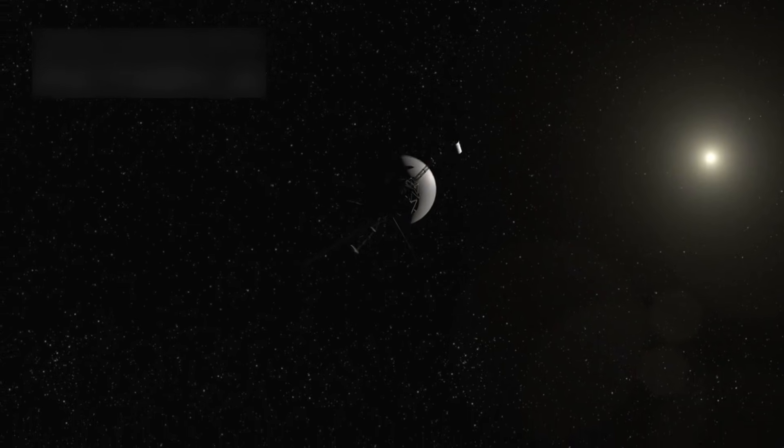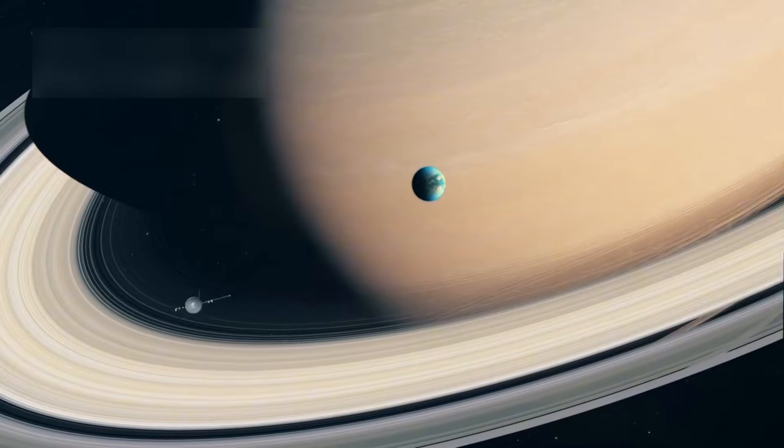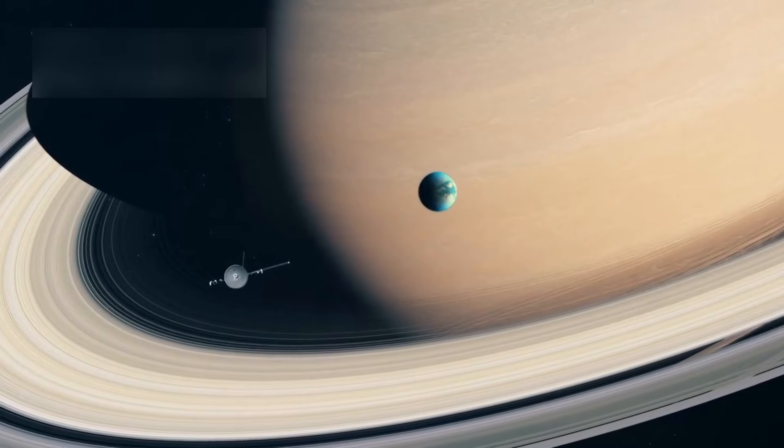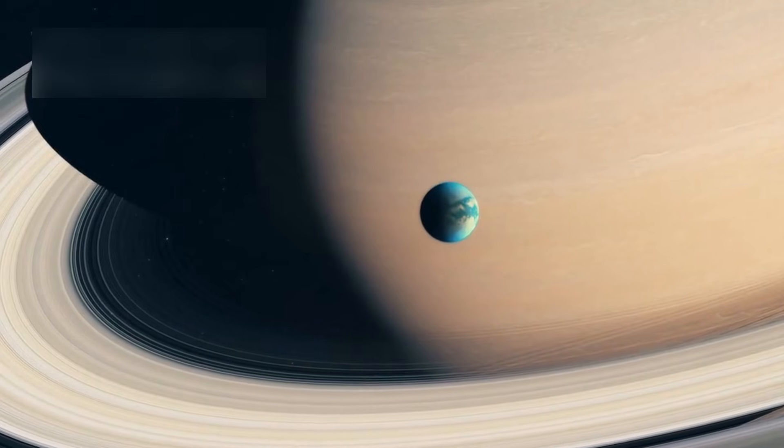On September 5, 1977, NASA launched Voyager 1, beginning one of the most daring space missions in human history. The spacecraft, along with its twin Voyager 2, was designed to explore Jupiter and Saturn, two of the gas giants that dominate our solar system.